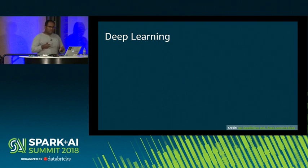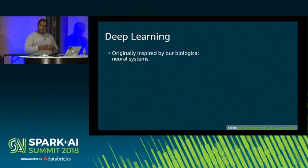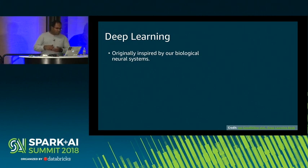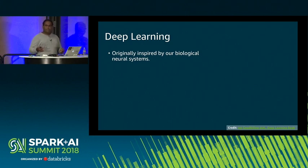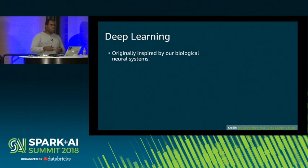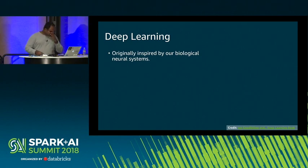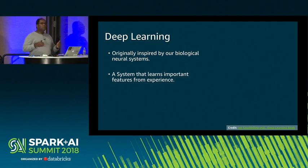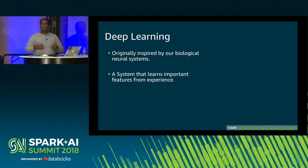Deep learning works a little differently. The terms deep learning and neural networks are often used interchangeably. Neural networks were originally inspired by our biological neural systems — how learning happens in our brain. Today it's become more of an engineering and algorithmic challenge to solve many different ML tasks. Deep learning learns important features by itself through experience, learning in terms of a hierarchy of concepts, building one concept at a time.